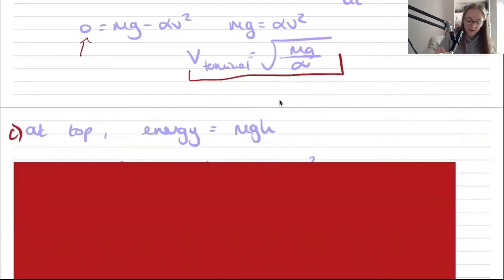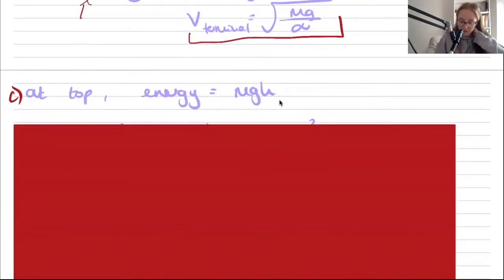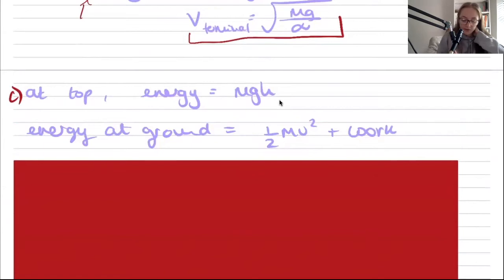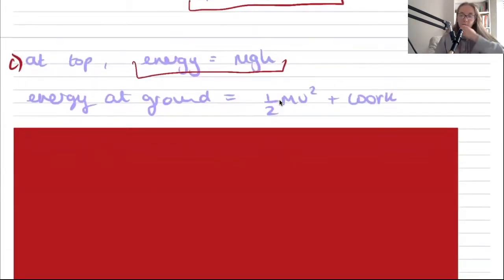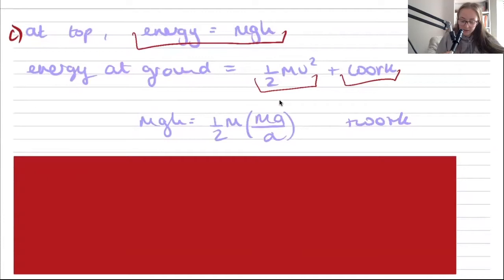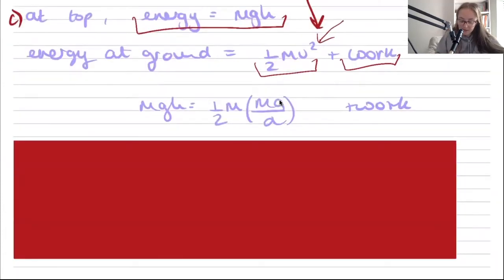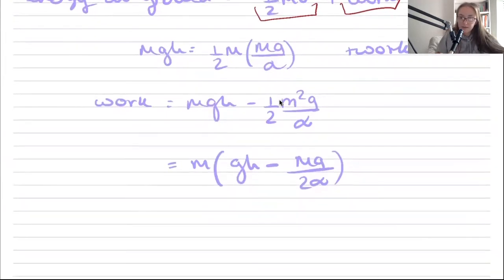For part c, we compare energy at the start and end. At the top, all energy is gravitational potential energy mgh. At the ground, energy is split between work done against air resistance and kinetic energy (using the terminal velocity). Setting mgh equal to half mv² plus work and rearranging gives the expression for work done.